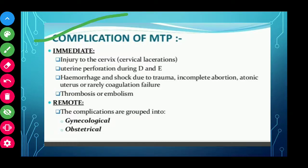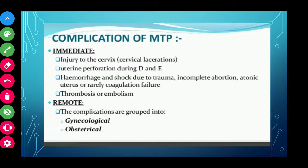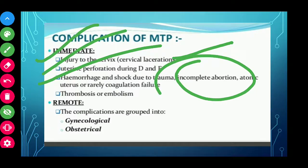Complications of MTP are divided into immediate and remote. Immediate complications occur just after the process and include: injury to the cervix or cervical lacerations, uterine perforation due to dilatation and evacuation surgery, hemorrhage and shock due to trauma, incomplete abortion, tonic uterus, and rarely coagulation failure, thrombosis, or embolism.